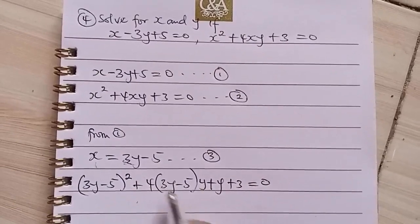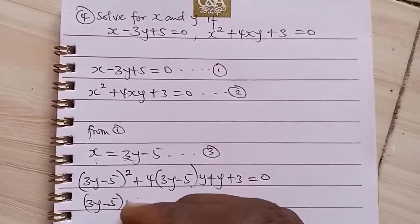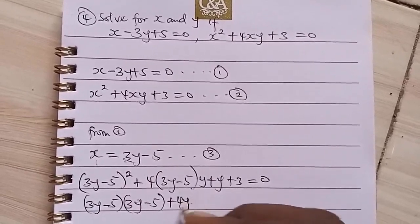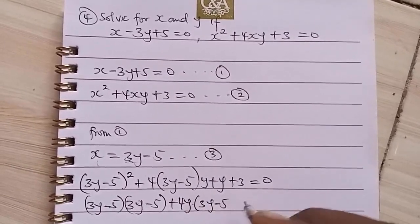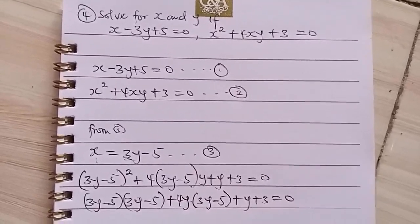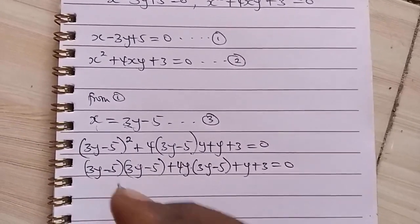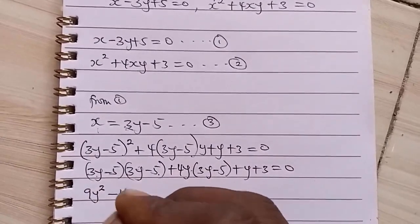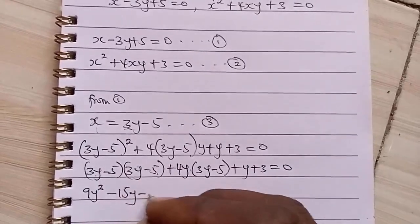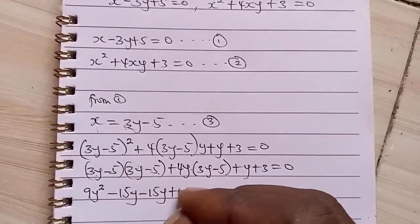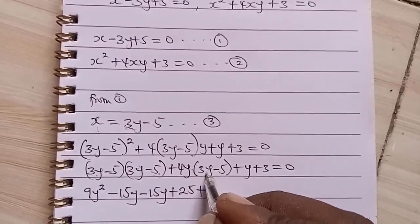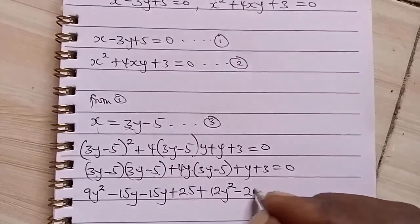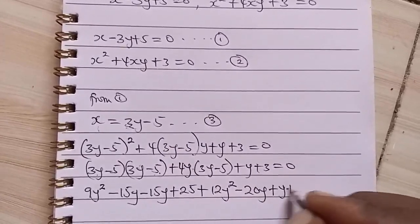This is the same thing as writing it as 9Y squared plus 4 times Y will give you 4Y into 3Y minus 5 plus Y plus 3 equals 0. Now, 3Y times 3Y will give you 9Y squared. 3Y times minus 5 will give you minus 15Y. Minus 5 times 3Y will give you another minus 15Y. Minus 5 times minus 5 will give you plus 25. Plus 4Y times 3Y will give you 12Y squared. Then 4Y times minus 5 will give you minus 20Y. Then we had plus Y plus 3 equals 0.